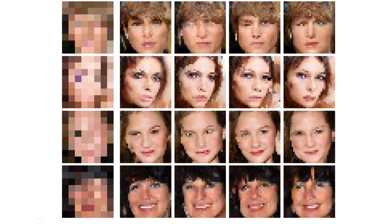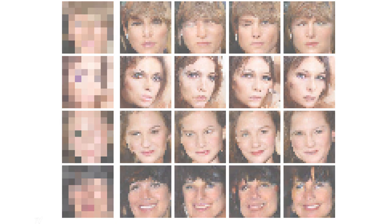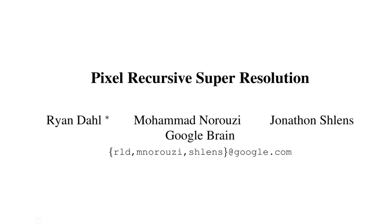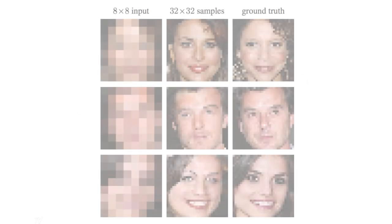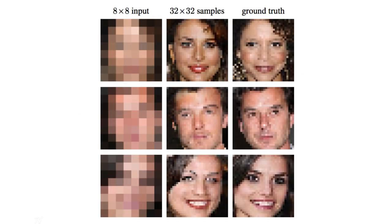Google Brain researchers have trained a deep learning neural network to take very low-resolution images of faces and predict what those faces would most likely look like. They call the method 'pixel recursive super resolution,' and it enhances the resolution of photos dramatically. In the image shown, you can see the original 8x8 photos and in the middle the system's guesses. Obviously it's not perfect, but it's pretty unbelievable that this neural network can guesstimate so well the features of a person within a photo.